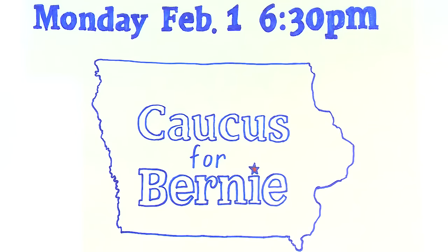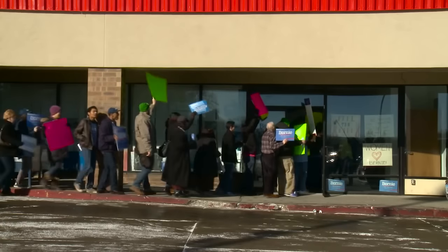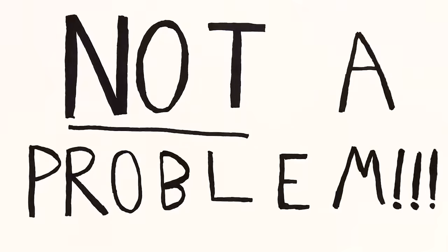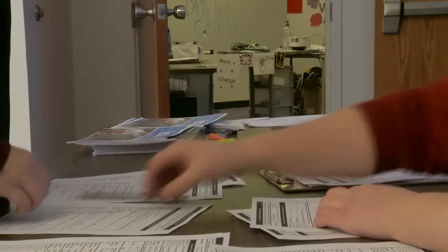Caucusing is easy. We made this mock caucus video to show you the basics. This is my first time voting — I'm not a registered voter, I'm just feeling the burn. Not a problem, just fill out this form and we'll get you registered as a Democrat. Hey, I'm a Republican — I want to break up the big banks. Can I caucus for Bernie? Not a problem, just fill out this form. I'm an independent — Bernie just inspires me. Nice, 100% not a problem, we'll get you registered as a Democrat.